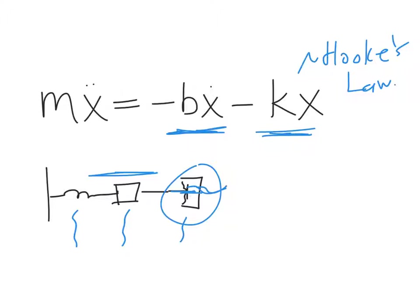This is the Hooke's Law term — the spring. Here's the damping term. Our acceleration, the sum of forces on our oscillating mass, is the damping plus the spring term.